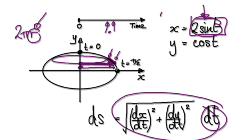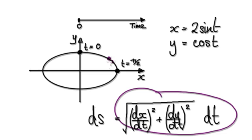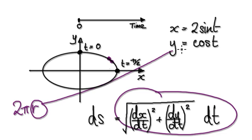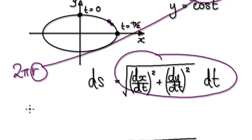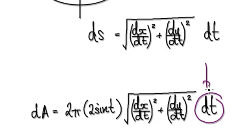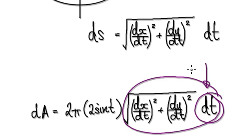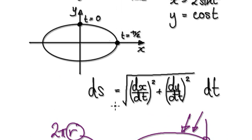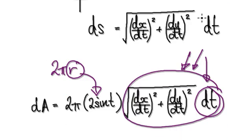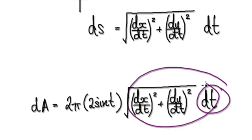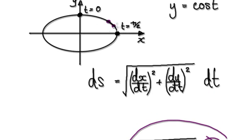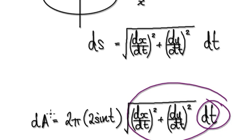So once you've got your small change in the arc length, you times it by 2πr, where r is this expression here. That would then represent the surface area along that strip — a small change in the surface area.